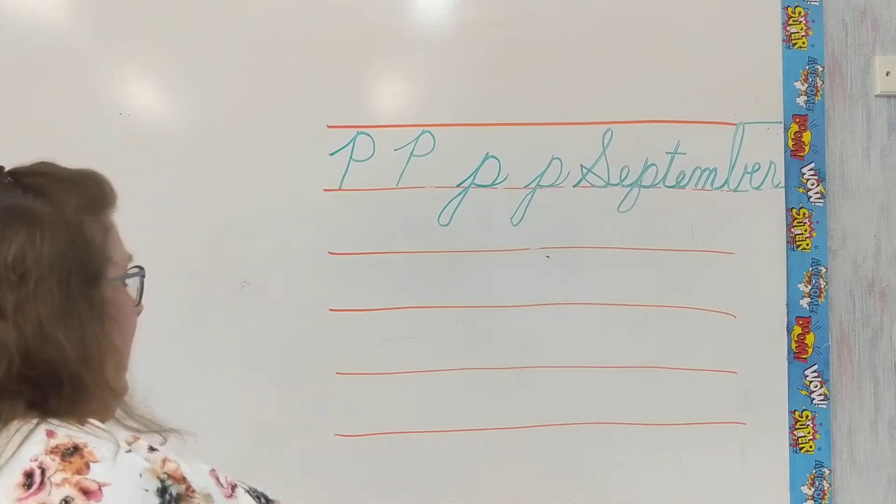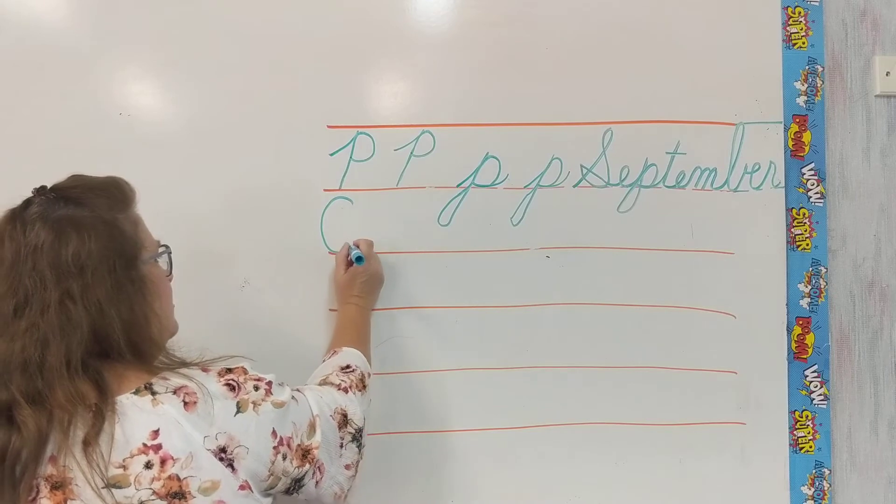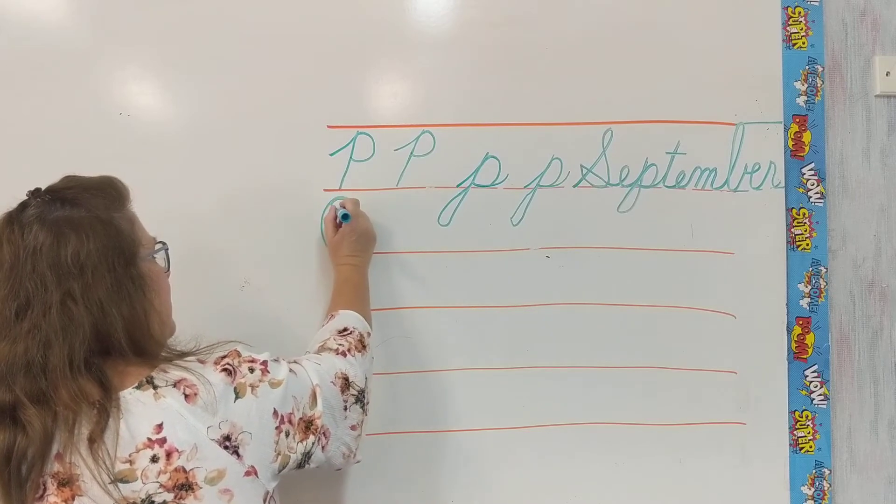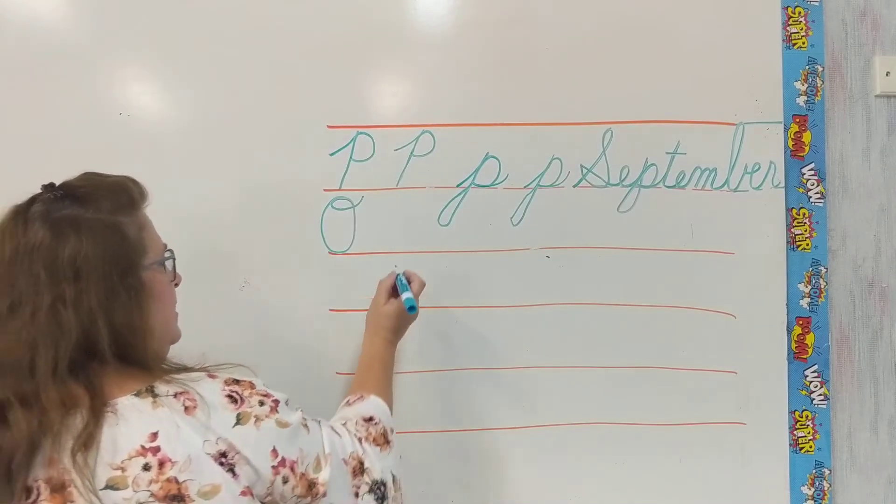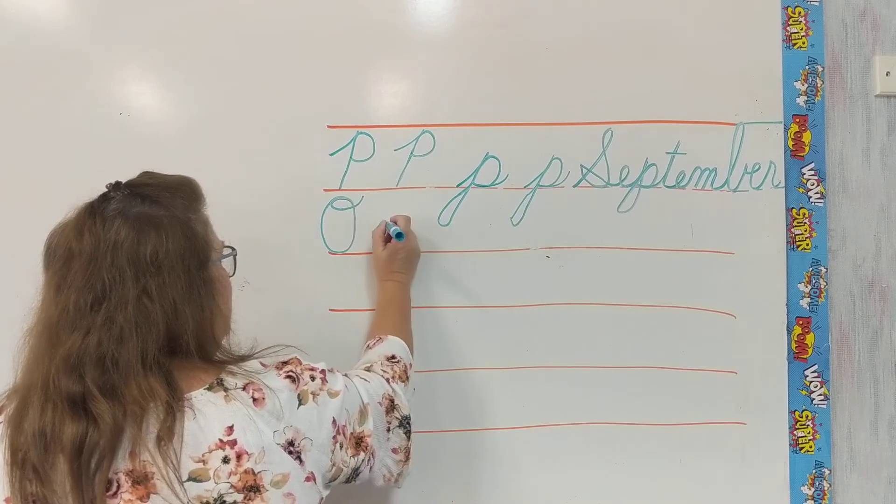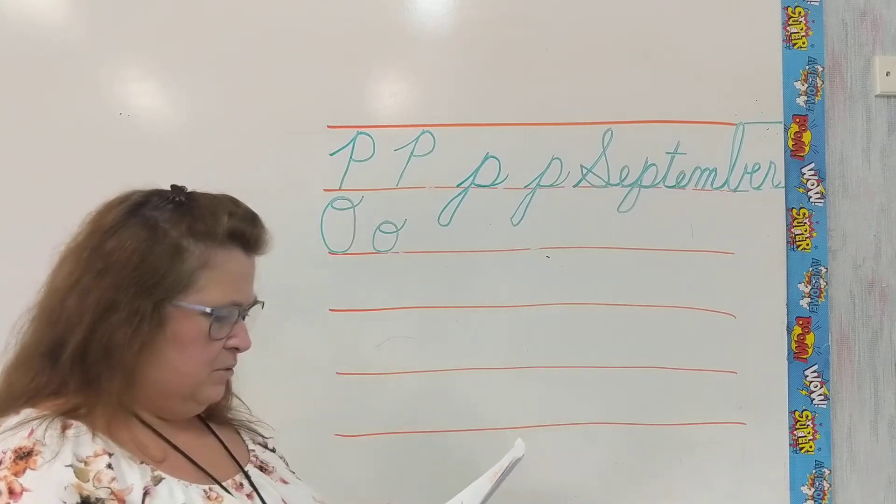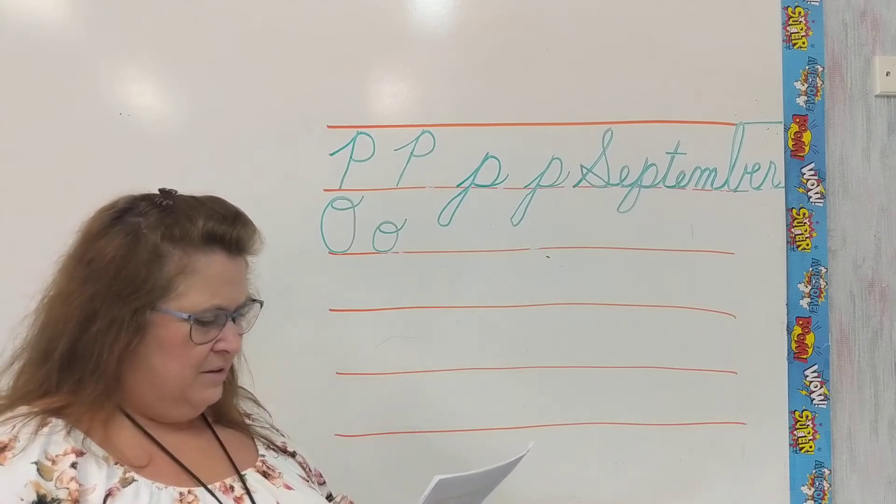And let's review capital O's and little O's from yesterday. Looking at the board. Around. Close it up. Retrace back around. Loop-de-loo at the top. Little O. Up. Curve around. Close it up. Loop-de-loo around and swing out at the top. Our curves, our swing outs, our loop-de-loos are at the top.